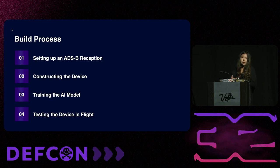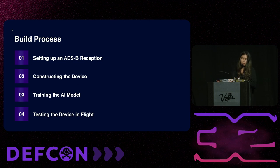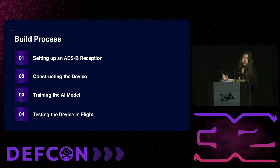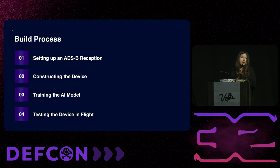I went through a four-step build process constructing this device. First, I set up an ADS-B reception ground station using four components I'll outline later. Then I constructed a portable device that could be stowed on the back of an airplane. I trained a deep neural network to detect instances of aircraft spoofing. And lastly, I stowed the device on the back of a sport cruiser and flew it around the South Bay to collect data to train the machine learning model.